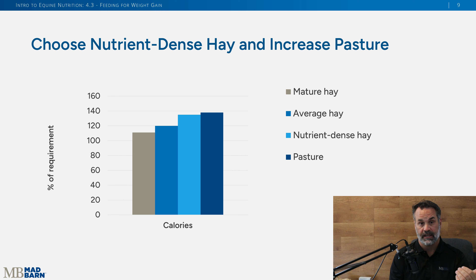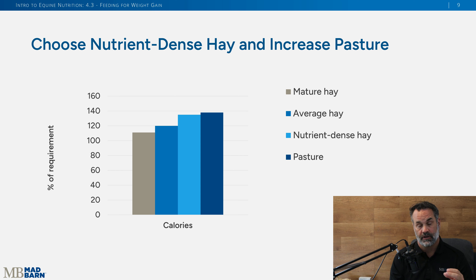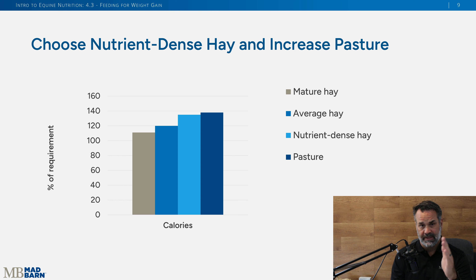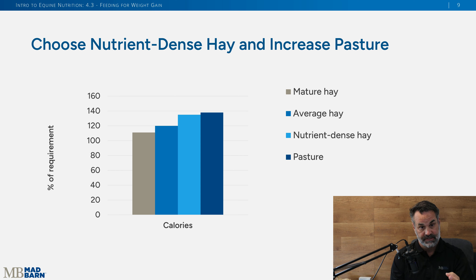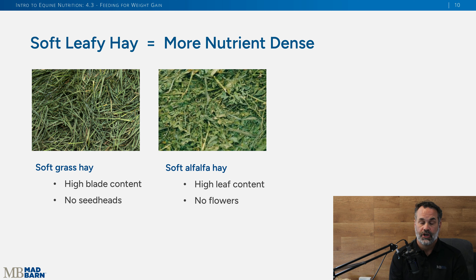Mature hay — the prickly, stemmy hay with fewer grass blades or fewer alfalfa leaves — sits just above calorie requirements for maintenance. Mid-maturity hay is your average hay where those calories go up. Nutrient-dense hay, such as a grass-alfalfa mix, provides a further calorie boost. Pasture is also a great option as it's more energy dense and horses will eat more throughout the day.